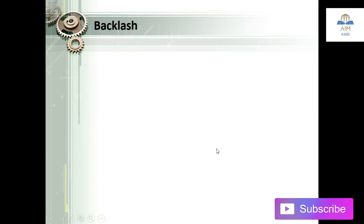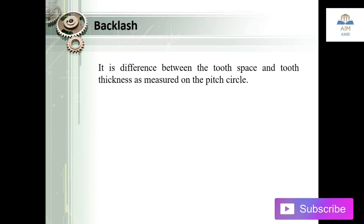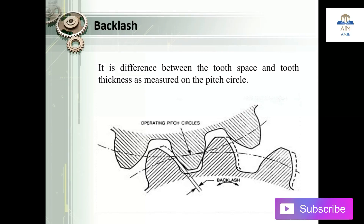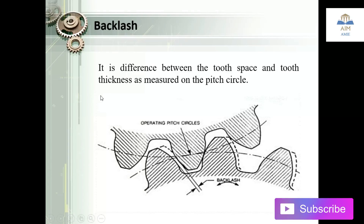The next one is backlash. Backlash is the difference between the tooth space and the tooth thickness as measured on the pitch circle. Backlash reduces the efficiency in transmitting motion and power.